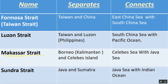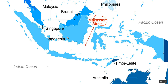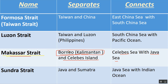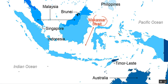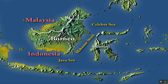The Makassar Strait separates Borneo (Kalimantan) from Sulawesi Island, and connects the Sulawesi Sea with the Java Sea. On the map, here is Borneo, here is Sulawesi Island, and the Makassar Strait between them connects the Java Sea with the Sulawesi Sea.